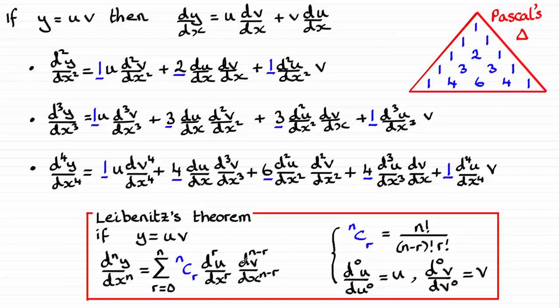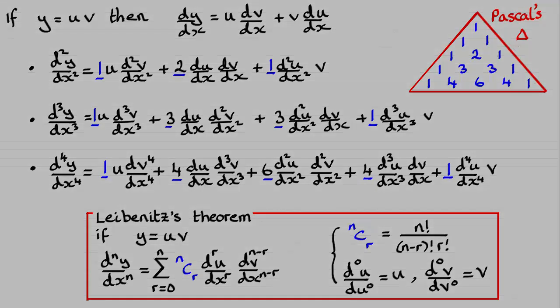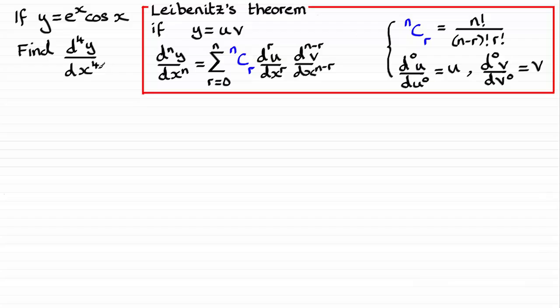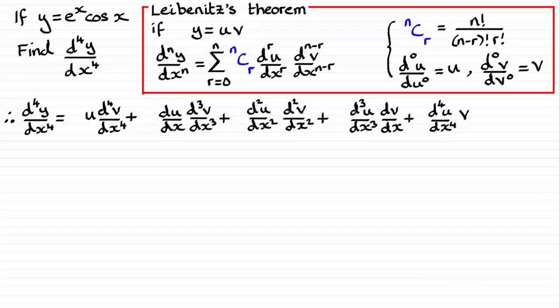Okay, so on this basis, what I'd like to do is just take you through another example. So looking at this example here, we've got y equals e to the power x cosine x, and we've got to find d4y by dx to the 4. So what I'd want to do is first of all write down the pattern structure that we get when we use Leibniz theorem.